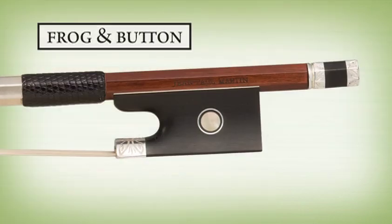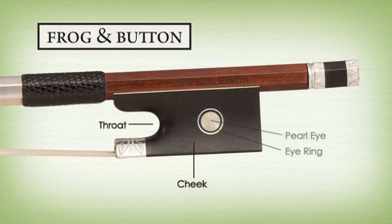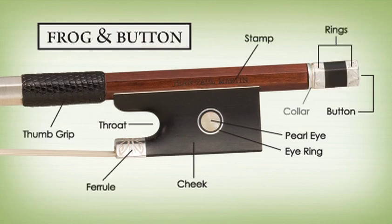The frog is the wood piece by the handle that holds the hair. It is also humanized with names like the cheek, throat, and eye. The button is the metal piece that turns to tighten and loosen the hair. Take a moment to get acquainted with these parts.